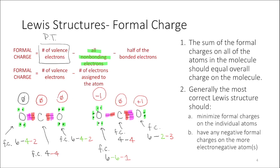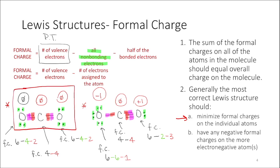The sum of the formal charges on all atoms in the molecule should equal the overall charge on the molecule. You can verify that holds for both structures. However, the most correct Lewis structure should minimize the formal charges on individual atoms. Structure one has every atom at a formal charge of zero, whereas structure two has one oxygen at negative one and one oxygen at positive one. So we would pick structure one as the better Lewis structure for carbon dioxide.